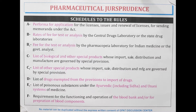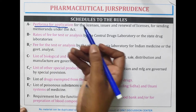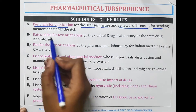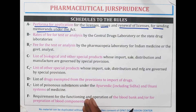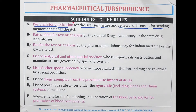The first is Schedule A. When we have to fill up an application, we first give it to Schedule A — the proforma for application for the license issue or renewal of licenses for sending memoranda under the act. So before filling up the form, we have to fill up the application form. Schedule A is the proforma for the application form, and after that we fill up the payment fees.